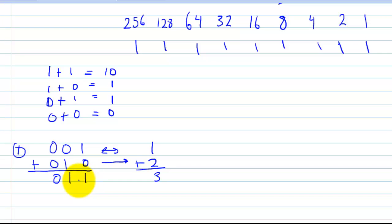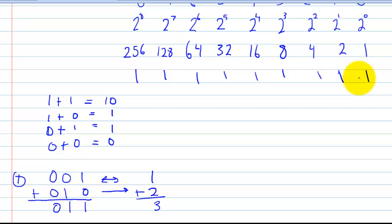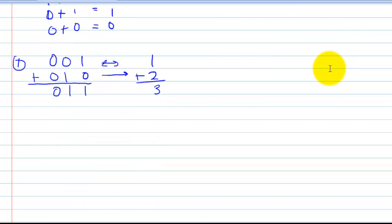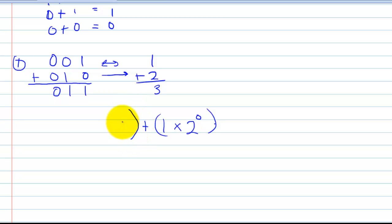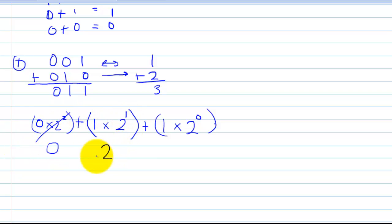So the result is zero-one-one. As a shortcut: we have a one in position zero (worth one) and a one in position one (worth two), so two plus one is three. If you verify the long way, one times two to the zero plus one times two to the one plus zero times two to the second power gives one plus two plus zero, which equals three. So zero-one-one in base two does represent three in base ten.